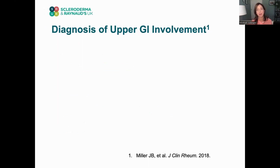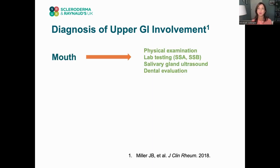How do we diagnose upper GI involvement? This is an evolving area of clinical practice in scleroderma, as we try to get better at early diagnosis, since symptoms may not be apparent early in the course of the disease. For the mouth, all patients should have a careful physical examination where the doctor looks inside the mouth. Certain labs — SSA and SSB, two autoantibodies seen in Sjögren's syndrome, another autoimmune disease associated with dry eyes and dry mouth — can be checked, as many scleroderma patients have this condition. Salivary gland ultrasound can sometimes be done, and regular dental evaluation is very important.